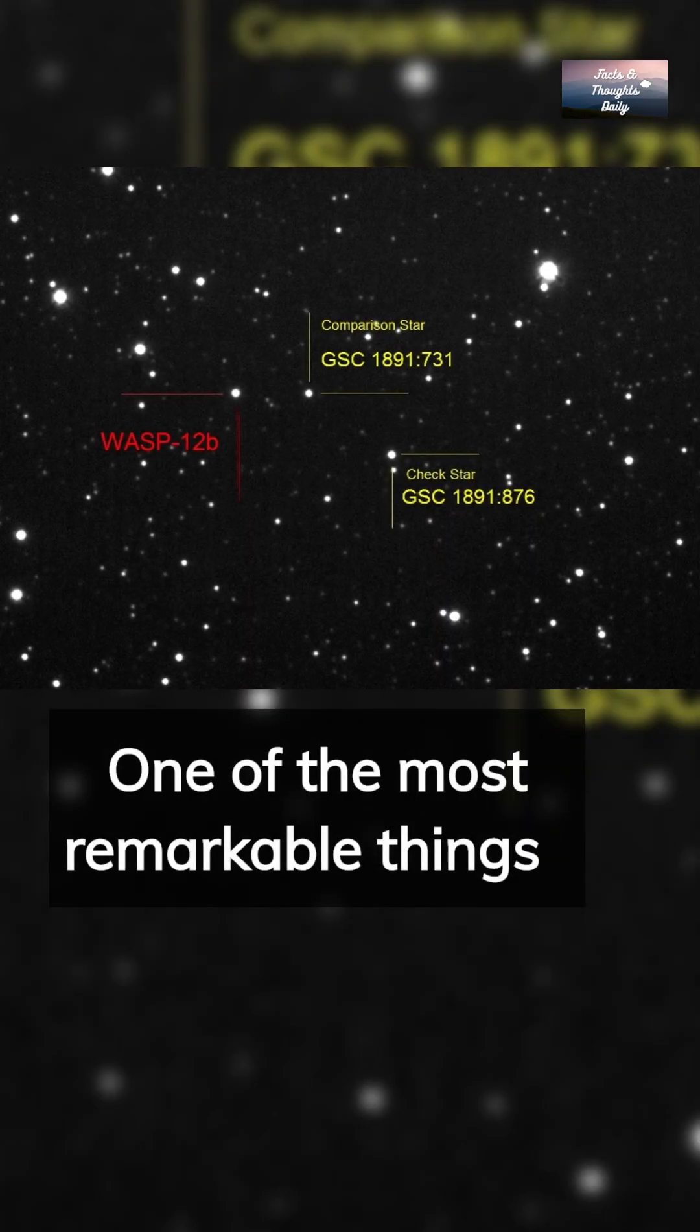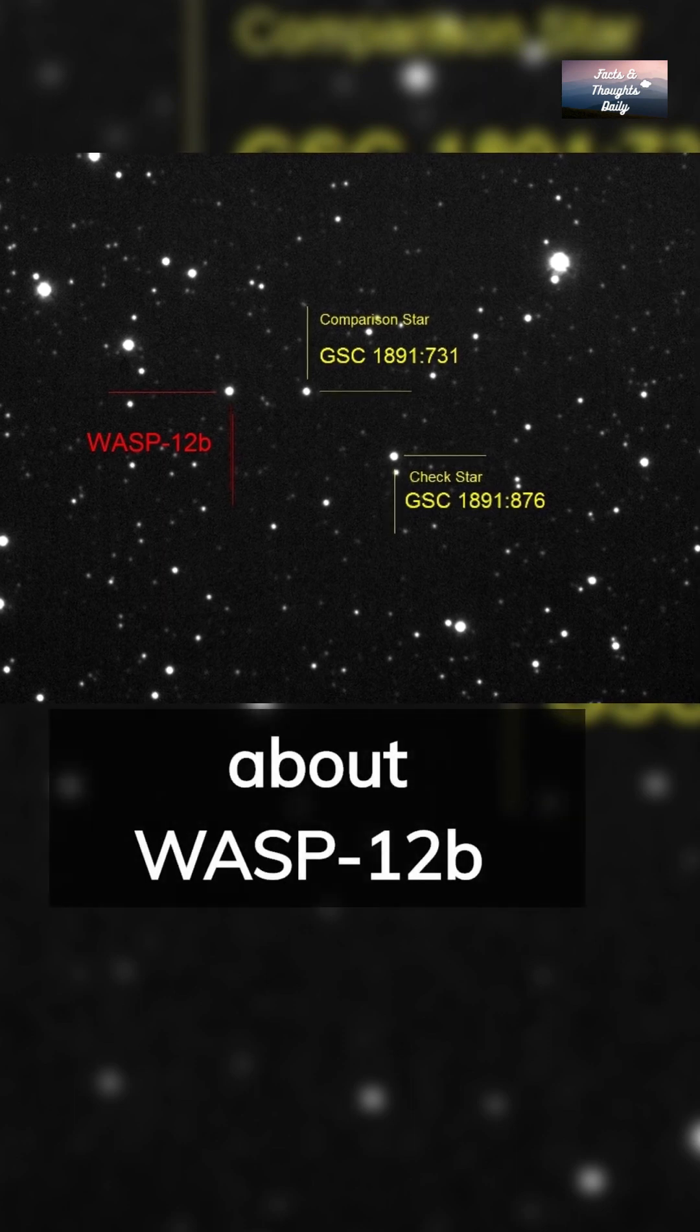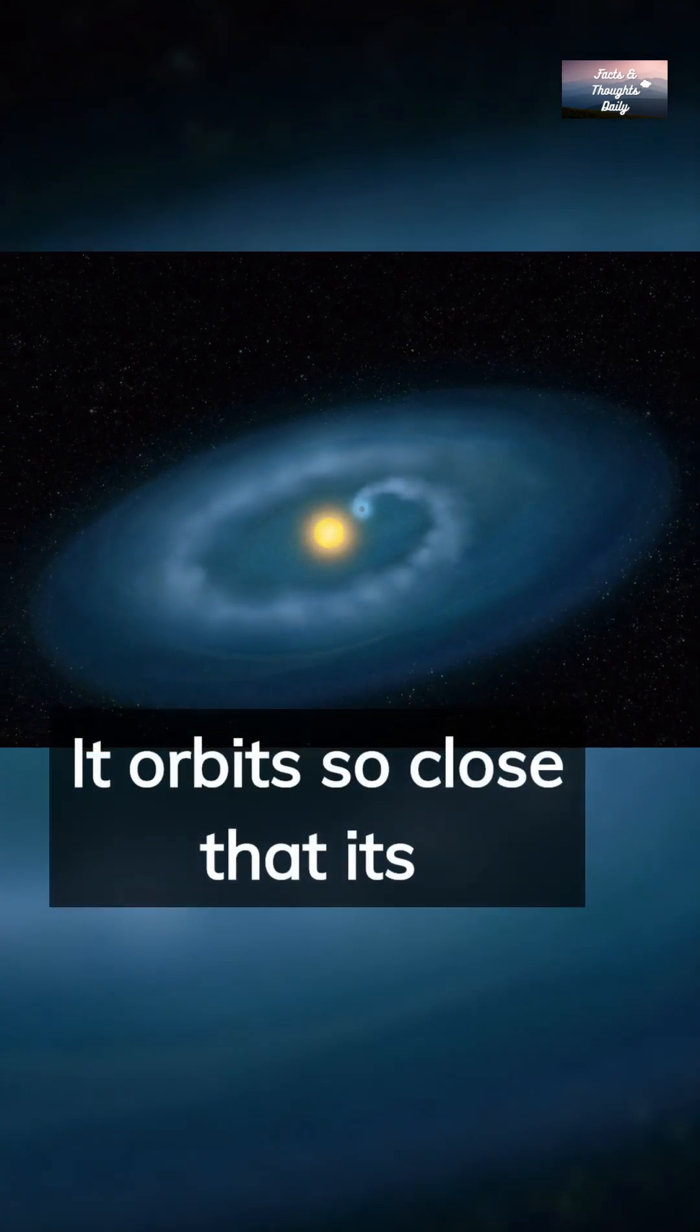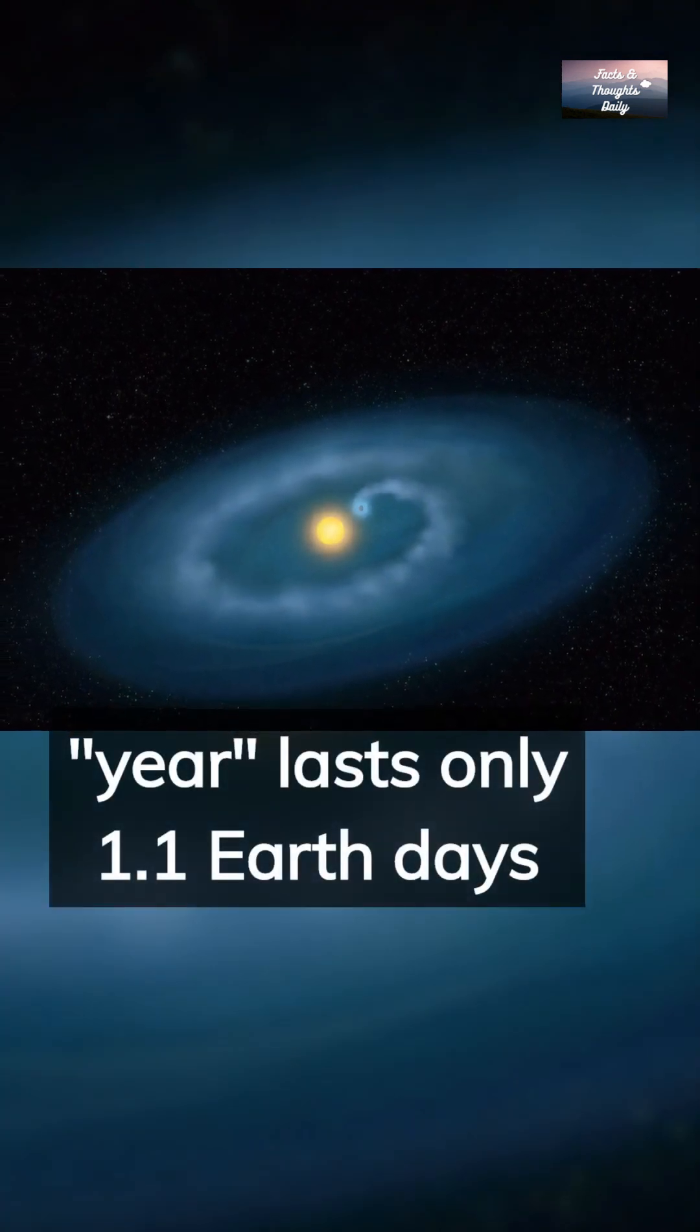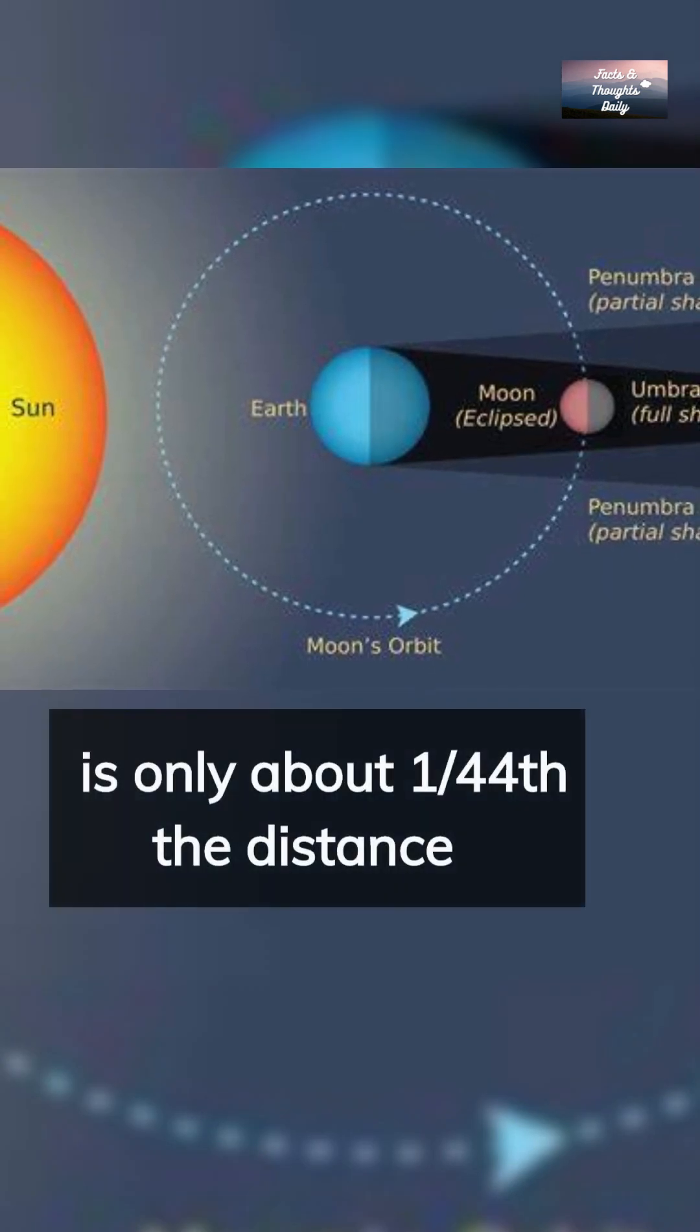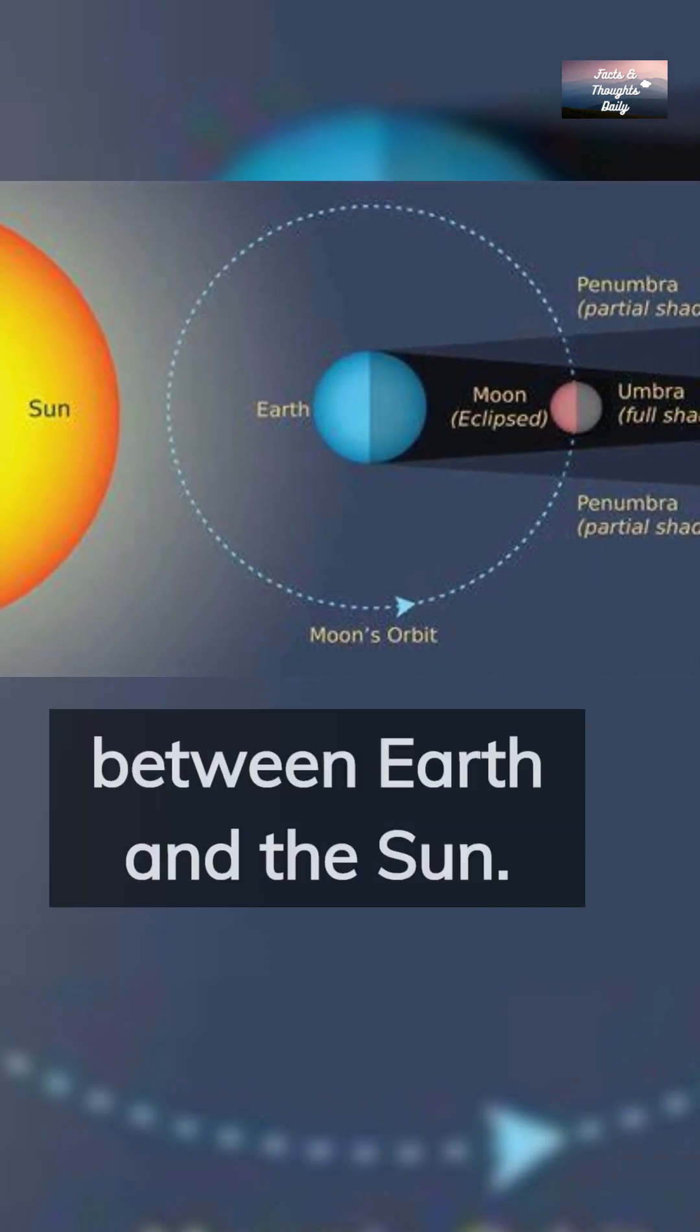One of the most remarkable things about WASP-12b is its extremely close proximity to its host star. It orbits so close that its year lasts only 1.1 Earth days, and its distance from its star is only about 1.44 the distance between Earth and the Sun.